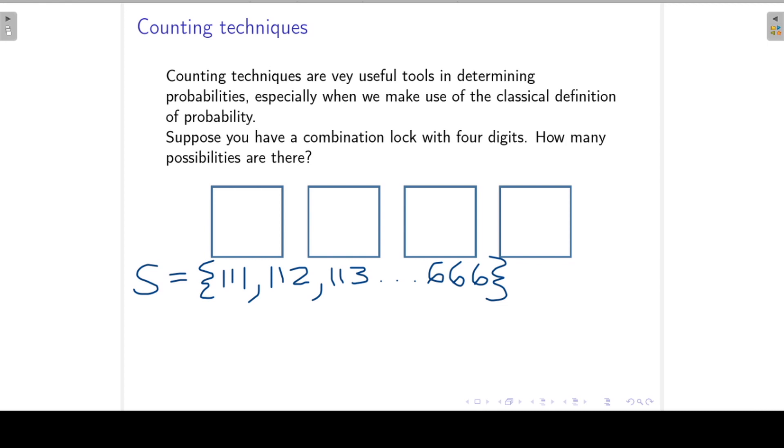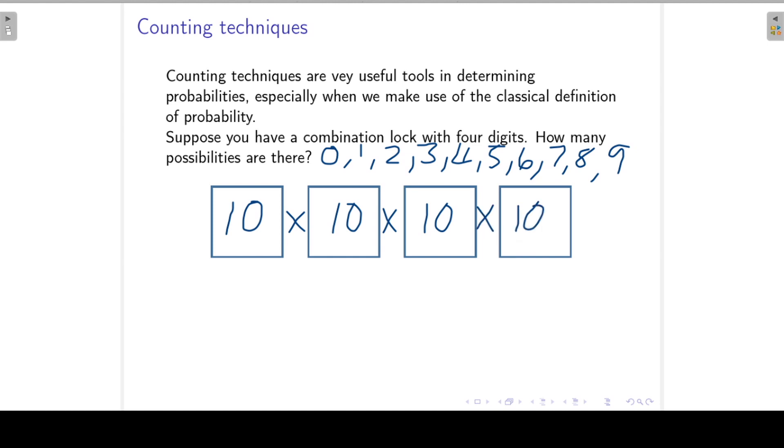Now let's look at this example here. Suppose you have a combination lock with four digits. How many possible combinations are there for this lock? We can choose any one from zero to nine, so we have a choice of ten. In the first position we have a choice of ten, in the second position we have a choice of ten, the third and the fourth position. So the total number of possible combinations for this lock is ten to the power four or ten thousand.